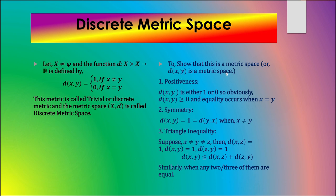To prove this forms a metric space: positiveness holds by definition since the value is either 0 or 1, so it is greater than or equal to 0, with equality only when both points are the same. For symmetry, if the points are equal there is no question, and if the points are different then d(x,y) = 1 and d(y,x) = 1 as well, since the value is always 1 regardless of order.